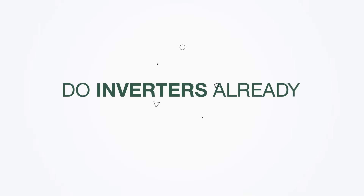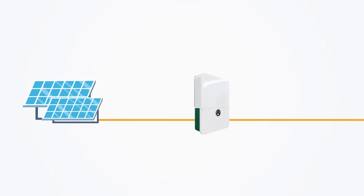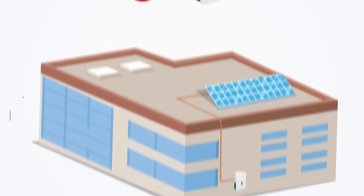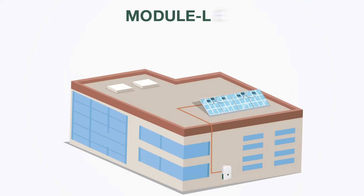Do inverters already take care of this? Inverters can prevent energy generated by the modules from getting past the inverter. However, high voltage can remain between the modules and the inverter. As a result, most rapid shutdown codes require shutdown to occur at the module level, hence the common use of module-level power electronics to meet this function.